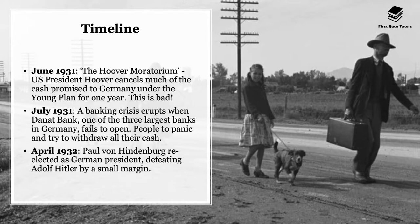In June 1931 came the Hoover Moratorium, named after US President Hoover, who essentially cancelled much of the cash promised to Germany under the Young Plan for one year — a terrible development. America was going through its own economic disaster and could no longer afford to give loans. Worse still, many American banks started recalling money, wanting Germany to repay loans, creating a vicious economic cycle for both countries.